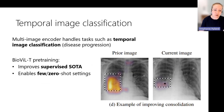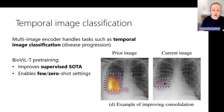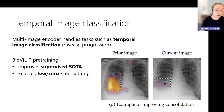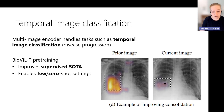Because we have a multi-image encoder, we're also able to handle temporal image classification tasks like disease progression classification. Here I'm showing an example of the model classifying improving consolidation. Our BioViLT pre-training improves supervised state-of-the-art, and also enables zero and few-shot variants of this task.